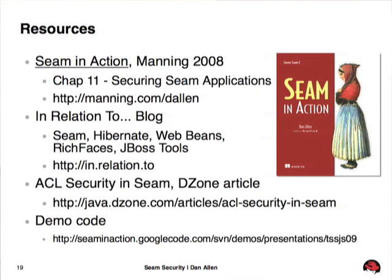I talk about securing SIEM applications heavily in chapter 11 of my book, including a detailed section on Drools with a soft introduction and very detailed coverage of how to use and set up rule-based security. Check out the in.relation.to blog if you're interested in SIEM, where I have a detailed blog entry on how to do identity management in SIEM. You can also check out the Dzone article on ACL security in SIEM. All the code you just saw is available on my book's code repository. Thank you all for attending — if you have any questions, come find me.